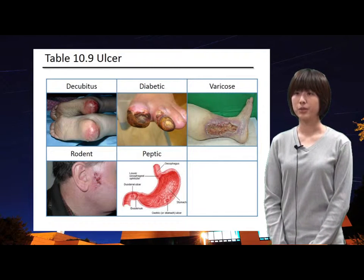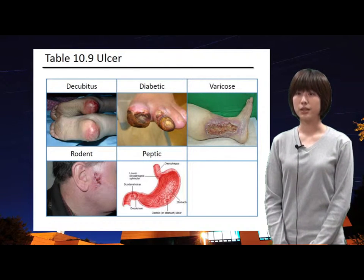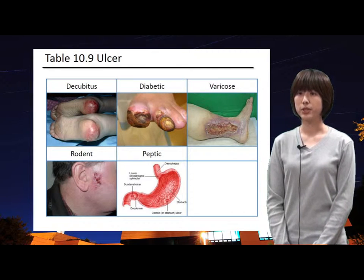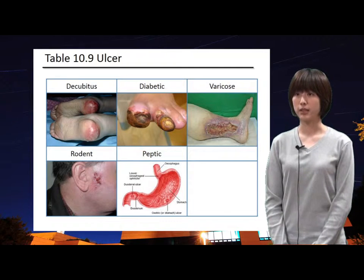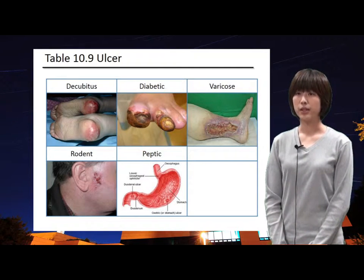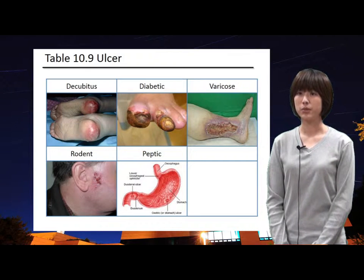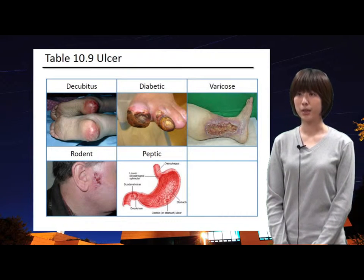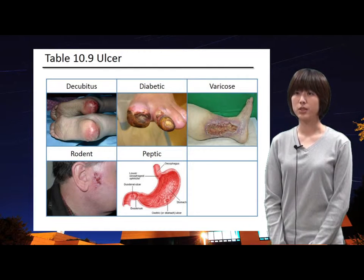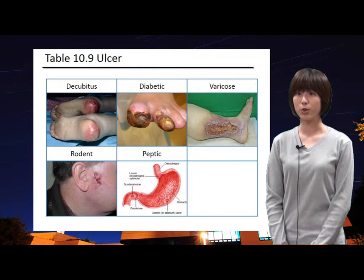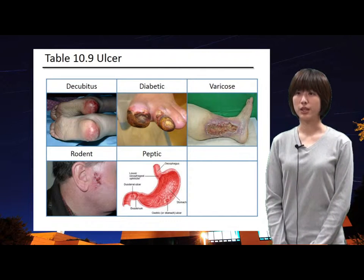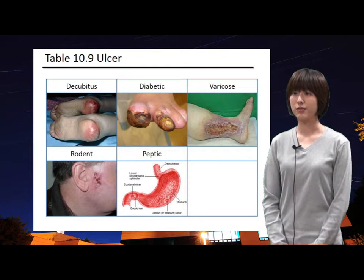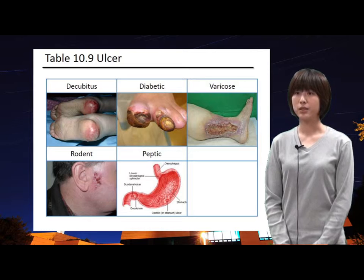Diabetic ulcers are caused by complications of diabetes. Commonly called diabetic foot ulcer, it occurs in 15% of all patients with diabetes and precedes 84% of all lower leg amputations. The failure in the wound healing process as well as development of macro and microvascular complications lead to diabetic ulcers, because diabetes itself is a metabolic disorder that impedes the normal steps of the wound healing process.